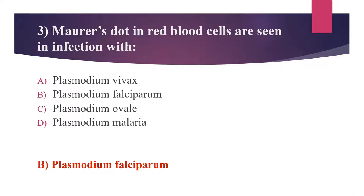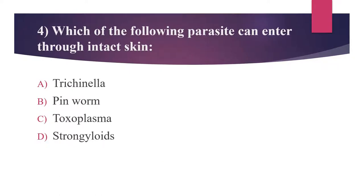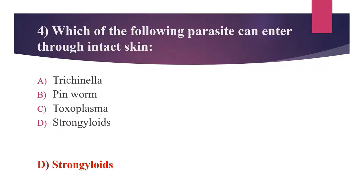The next question: Which of the following parasites can enter through intact skin? Option A: Trichinella. Option B: Pinworm. Option C: Toxoplasma. Option D: Strongyloides. The answer is Option D, Strongyloides. Infection in humans occurs via penetration of larvae through the skin due to walking or working barefoot in places contaminated by human faeces.